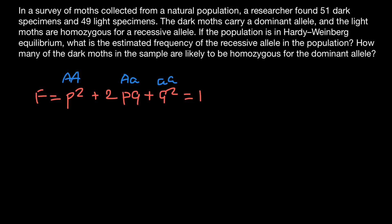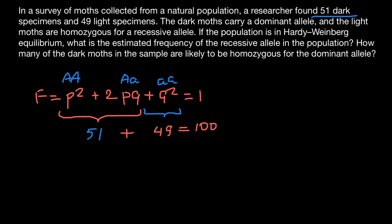We are told that dark moths must have at least one dominant allele, and in the population we have 51 such insects who are dark. We also have insects that are light, and that number is 49. So 51 plus 49 gives us 100, so calculations should be very easy because we have very convenient numbers.